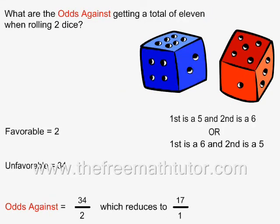In this example, what are the odds against getting a total of 11 when rolling two dice? There are six things that can happen when we roll a single die. When we roll two dice, we have to multiply 6 by 6, and there are 36 combinations that can happen.